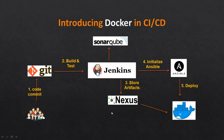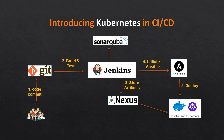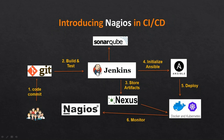Once that is working properly, we'll introduce Kubernetes. We'll create a Kubernetes cluster and, using Docker images, deploy the pods. After doing all this, we need to monitor our infrastructure, so we are going to introduce Nagios. That is how we are going to set up our CI/CD pipeline.